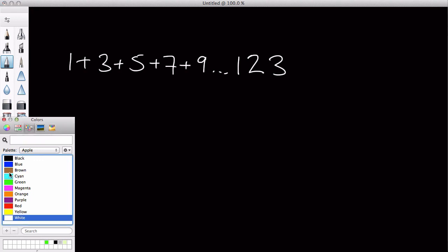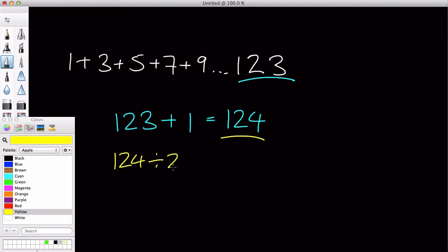Okay, the first thing we are going to do is get this biggest number, 123, and we are going to add 1 to it, which equals 124. The second thing we are going to do is get that 124, and we are going to divide it by 2, which equals 62.